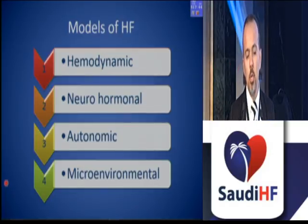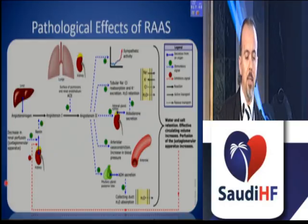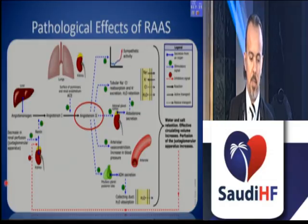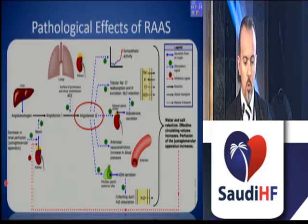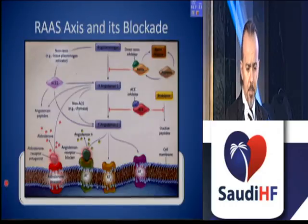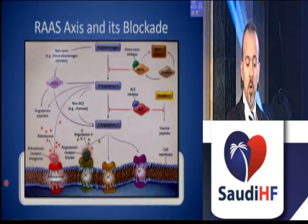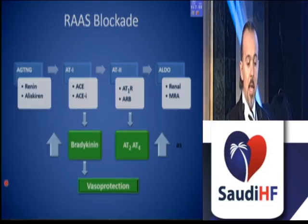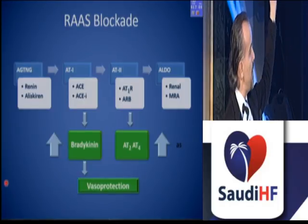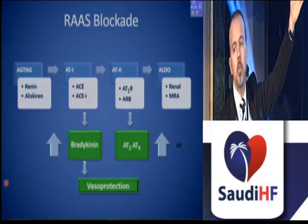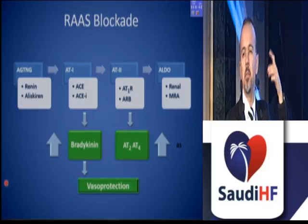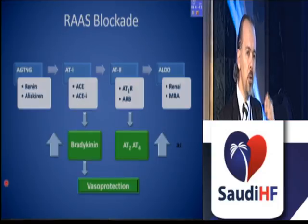When we see the main model, it is the neurohormonal model. The main driver is the pathological effects of the renin-angiotensin-aldosterone axis, with angiotensin II as the main modulator. We end up with water and salt retention as effective circulating volume decreases and perfusion of the juxtaglomerular apparatus changes. Blockade of the renin-angiotensin-aldosterone axis can be beneficial from several perspectives. Different drugs block this axis — the newest being direct renin inhibitors — but the most commonly tested is ACE inhibition. We also have many ARB studies, and MRAs are a relatively newer category.